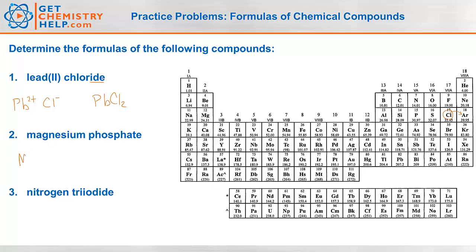Magnesium phosphate. Magnesium is Mg — it lives in group 2, and all metals in group 2 are 2-positive, so magnesium is 2-positive. Phosphate: if it ends in '-ate' or '-ite,' that tells you it's a polyatomic. Phosphate is PO₄ 3-negative. A 2-positive and a 3-negative don't balance, so we use the crossover rule: put a 3 over magnesium and a 2 over phosphate. Three magnesiums give 6-positive, and two phosphates give 6-negative. Six positives and six negatives balance out: Mg₃(PO₄)₂.